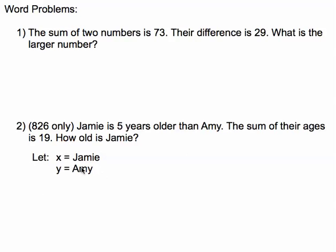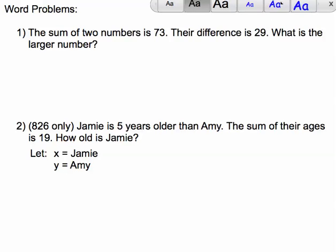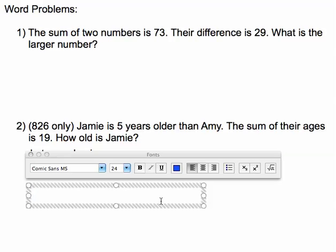So when I do that, I can make two relationships based on the information given. It says Jamie is, that means Jamie's age which is x, equals five years more than Amy. So x is going to be equal to Amy's age plus five. So x equals y plus five.